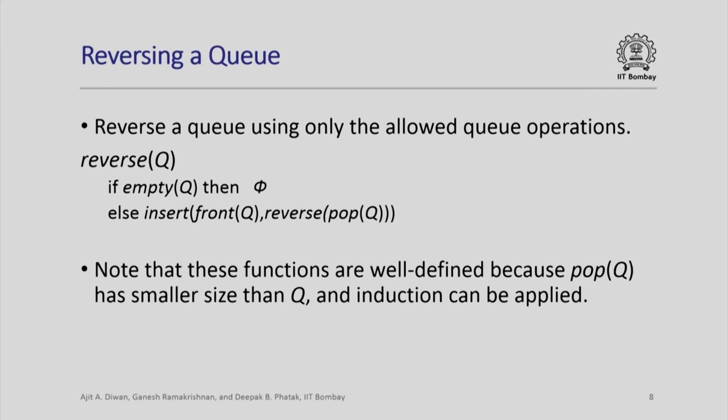To be formally precise, we should define it when the queue is empty and define it when the value of the queue is obtained by pushing an element into some smaller queue. In this case we are assuming it is defined for pop(queue) and then defining it for queue.